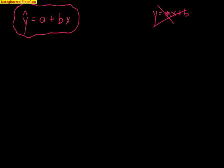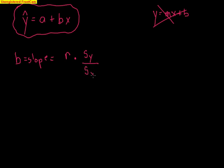b, next to the x, is the slope of the line. The formula to find slope is: b = r times the standard deviation of y divided by the standard deviation of x. So you take the standard deviation of all your y values, divide by the standard deviation of all your x values, and multiply by r to get the slope.